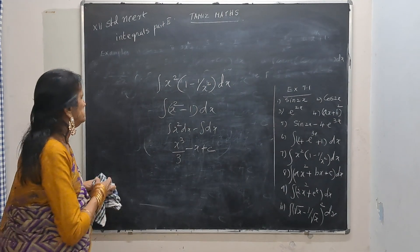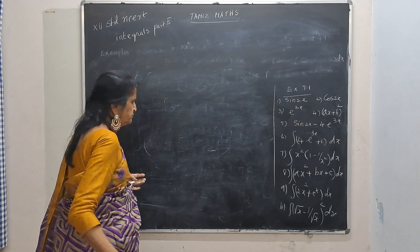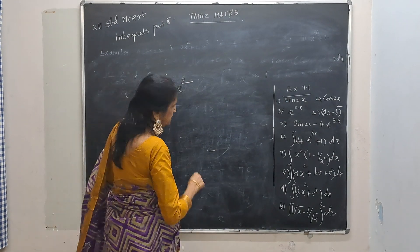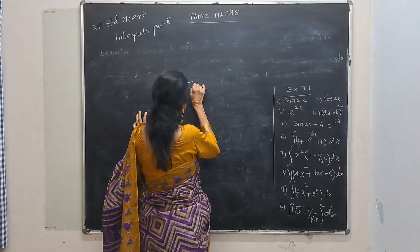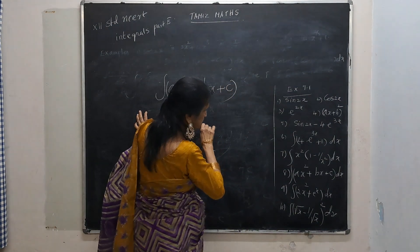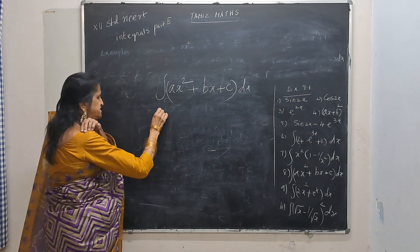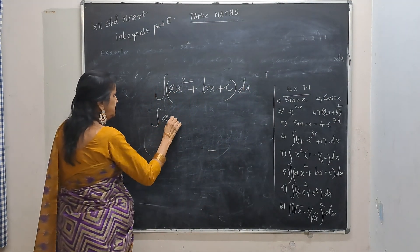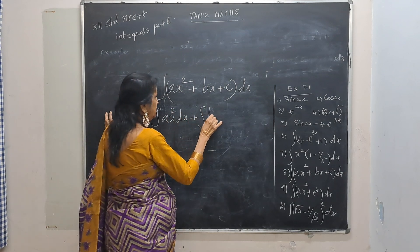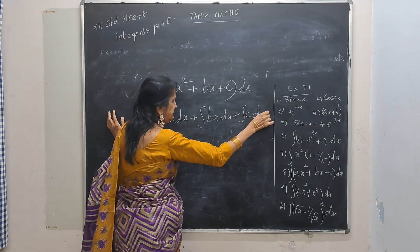Next: integrate ax squared plus bx plus c dx. Split into: integral of ax squared dx plus integral of bx dx plus integral of c dx.